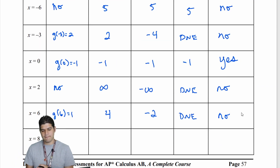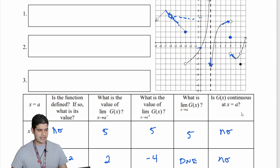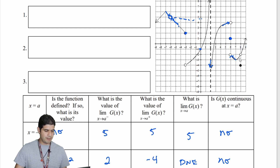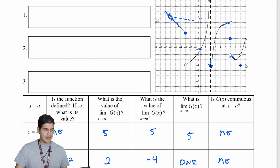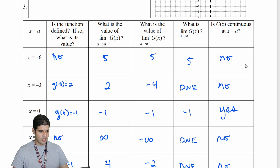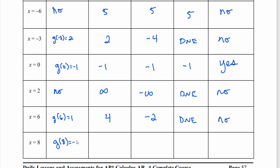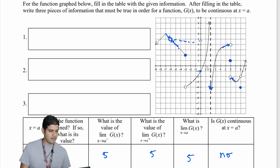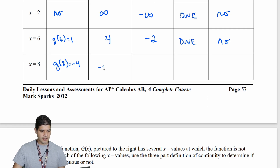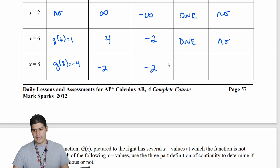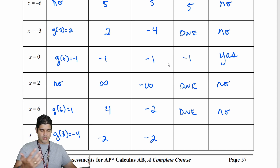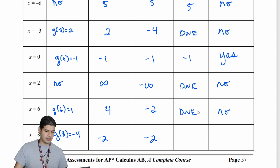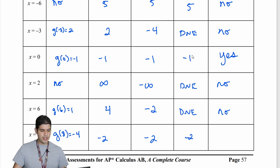We have one more point: x equal to 8. We have a point discontinuity — the value is at negative 4, so g of 8 equals negative 4. Looking at the limits from both the left and right side at x equal to 8, both limits point to the same value: negative 2. So the limit as x approaches 8 is negative 2. But we don't have continuity here because the function value and the limit are not equal.